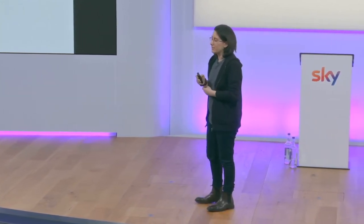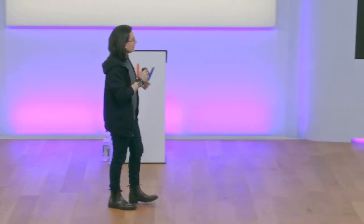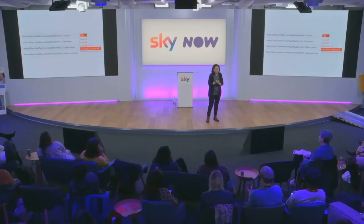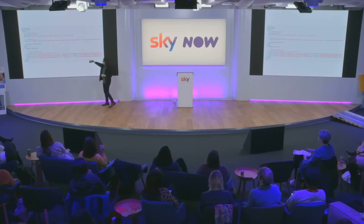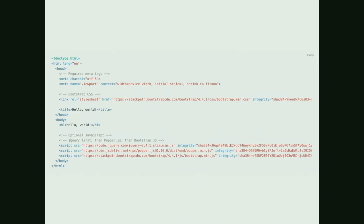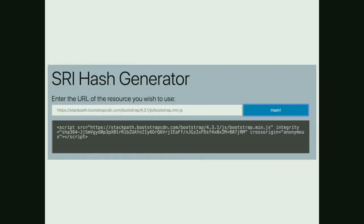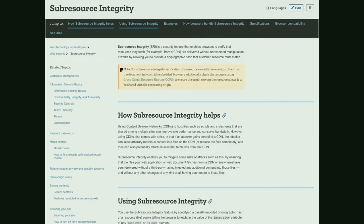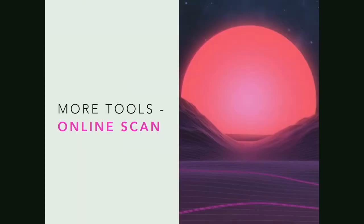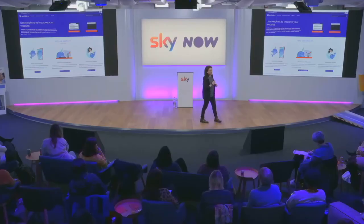Another good security layer is Sub-Resource Integrity (SRI). It's a security feature that enables browsers to verify that resources they're fetching haven't been tampered with. If you're fetching jQuery, Bootstrap, or other packages, there's an option to copy the script tag with the SRI integrity checksum. If you want to add it to in-house scripts, you can use the SRI Hash Generator. Browser coverage is about 98%, and there's excellent documentation on MDN.